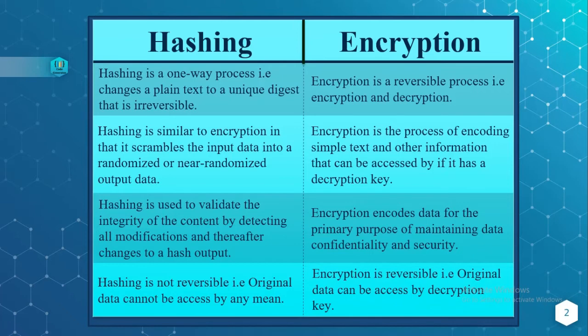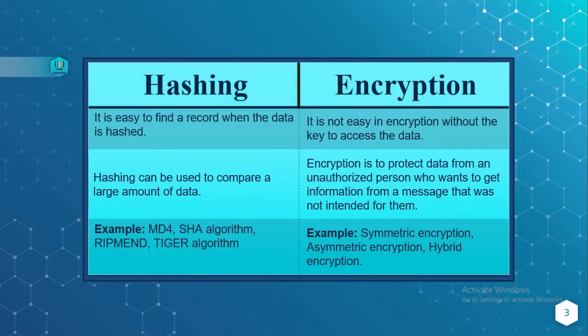Encryption encodes data for the primary purpose of maintaining data confidentiality and security. Hashing is not reversible — original data cannot be accessed by any means even if you know the algorithm. Whereas encryption is reversible — original data can be accessed using the decryption key. With hashing, it is easy to find a record when data is hashed, compared to encryption.